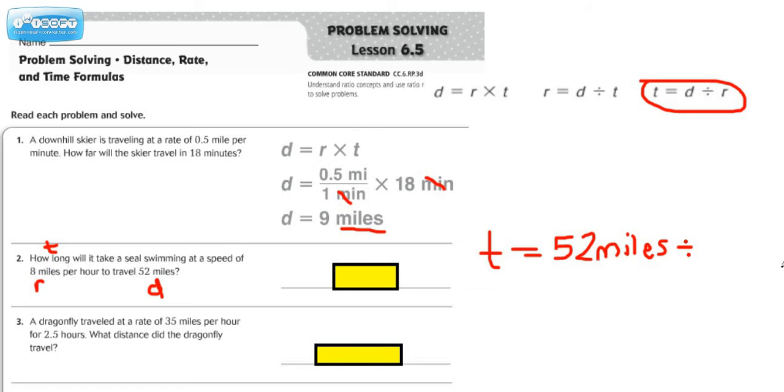So we're going to write it kind of like this. 8 miles per, and in this case it's per hour, per one hour.